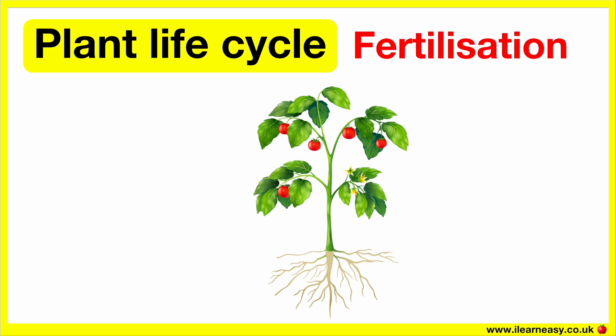Over time, the plant wilts and dies. The seed head will dry out and release the seeds. The seeds may be planted in the soil or will be dispersed by wind, animals, water, etc. This means the cycle begins over again.